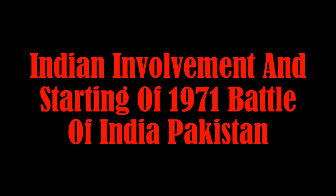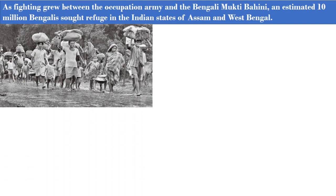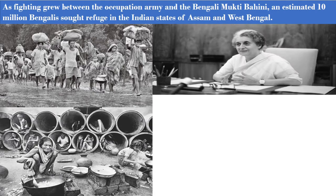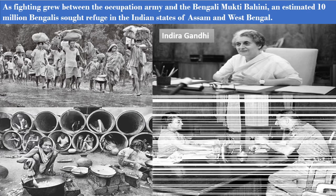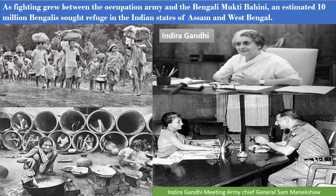Now comes the third part: Indian involvement and the start of the 1971 India-Pakistan War — the third war between the two countries within 24 years of their freedom. As fighting grew between the occupation army and the Bengali Mukti Bahini, an estimated 10 million Bengalis sought refuge in the Indian states of Assam and West Bengal. Indian Prime Minister Indira Gandhi concluded that instead of taking in millions of refugees, India would be economically better off going to war against Pakistan. By the end of April 1971, she had asked Indian Army Chief General Sam Manekshaw if he was ready to go to war with Pakistan. He said he could guarantee victory if she would allow him to prepare for the conflict on his terms and set a date — Indira Gandhi accepted his condition.